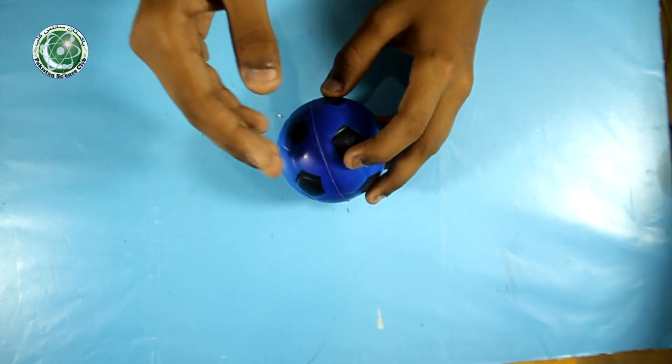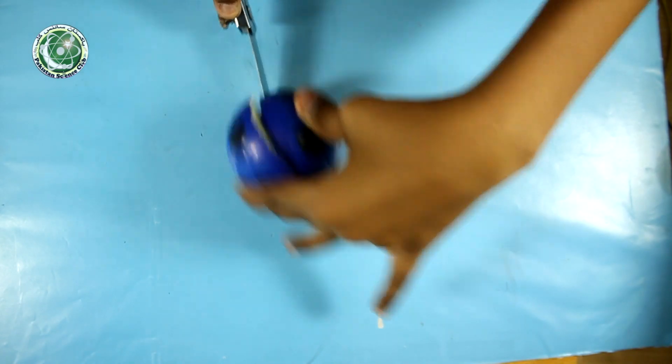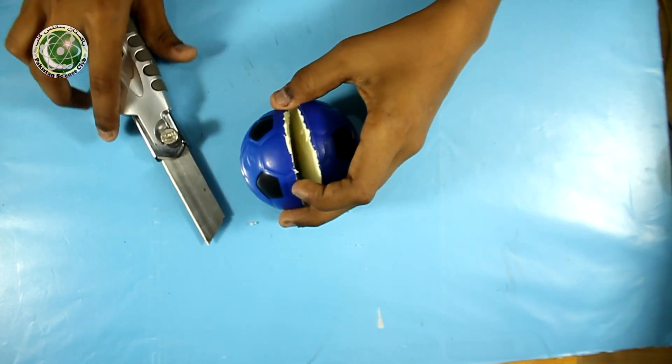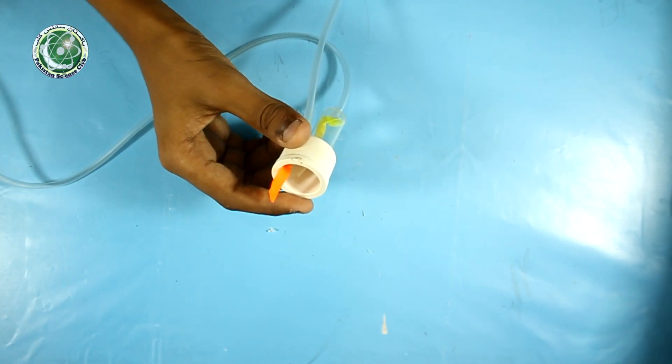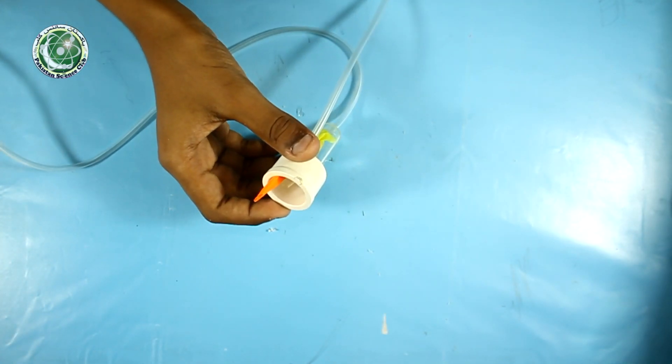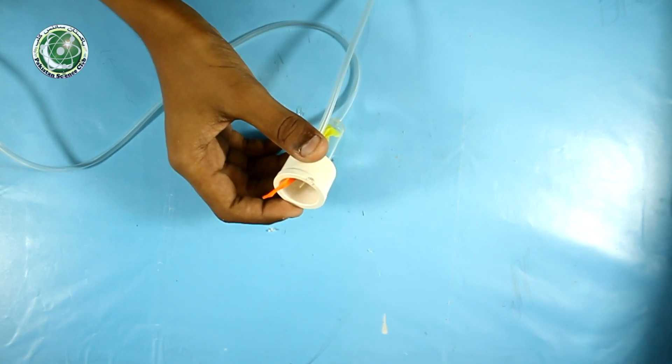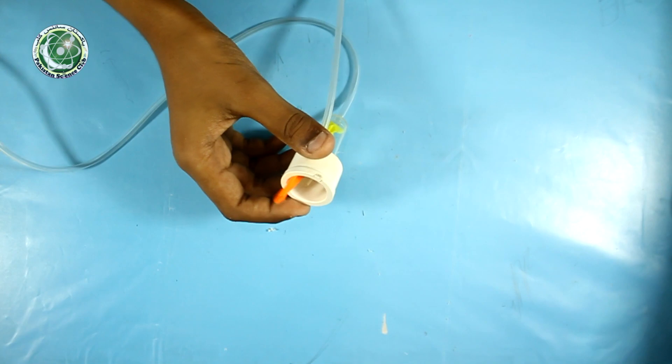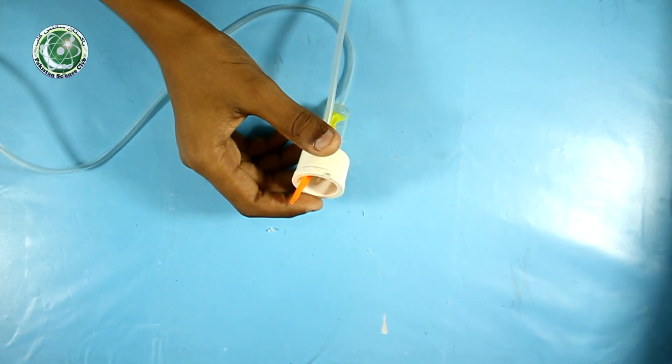Now I will take the foaming ball and cut it in half. What actually happens in these valves: when we blow, the air passes through the balloon. And when we suck it, the air stops due to contraction.